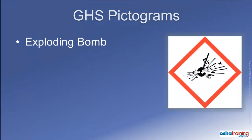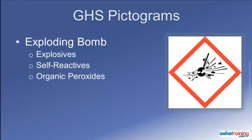The third pictogram depicts an exploding bomb and appears on products that are explosive. It can also be found on labels for self-reactive products and for organic peroxides.